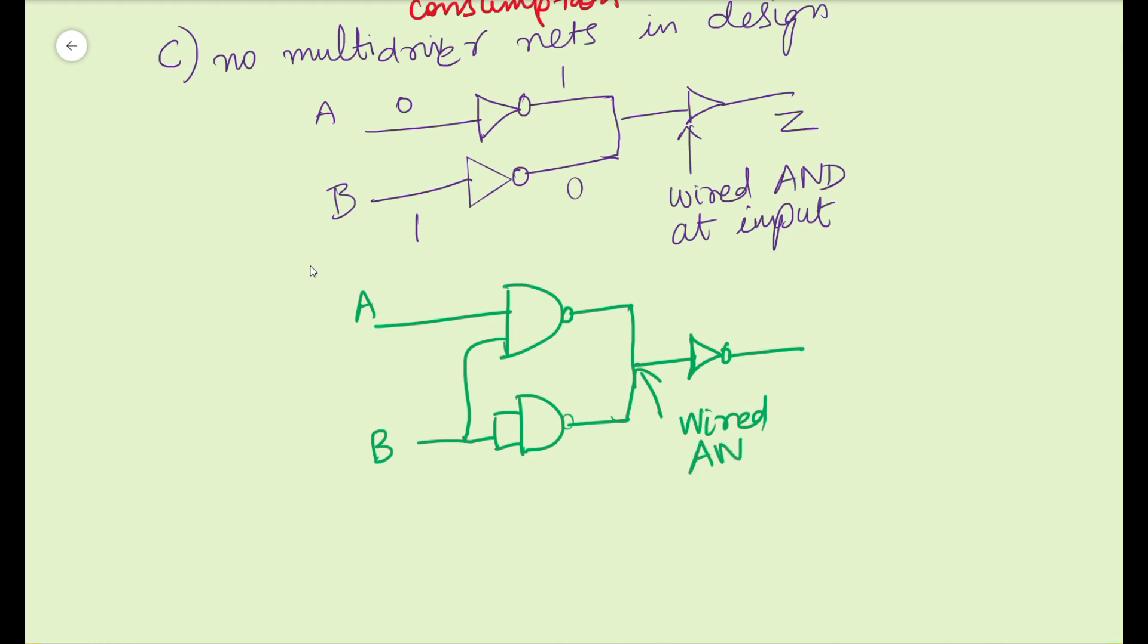In this case, outputs of both NAND gates are driving common inverter input. There is a possibility that both outputs can be different, hence an ambiguous or garbage value is passed to the inverter input. That garbage value will be forwarded in the circuit, which we don't want. Hence we must avoid all multi-driven nets in the design.